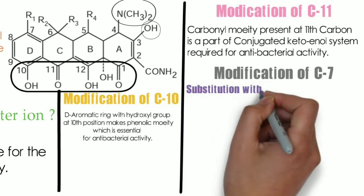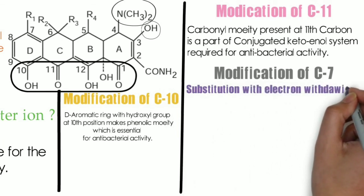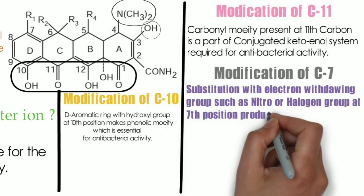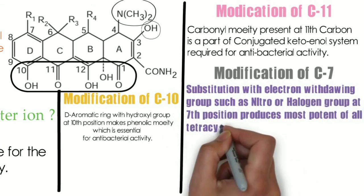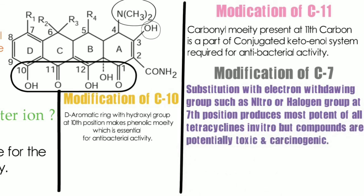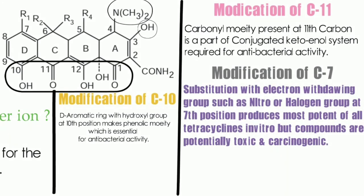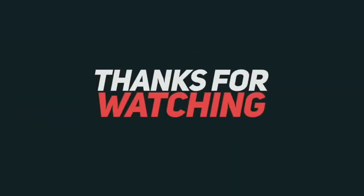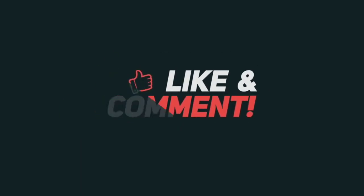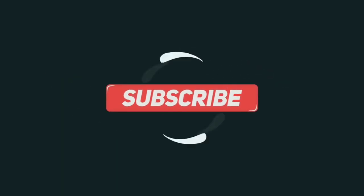At the seventh position, the R1 group is present. Substitution with electron-withdrawing groups such as nitro or halogen at position 7 produces the most potent of all tetracyclines in vitro; however, they are potentially toxic as well as carcinogenic, so they are not used clinically.